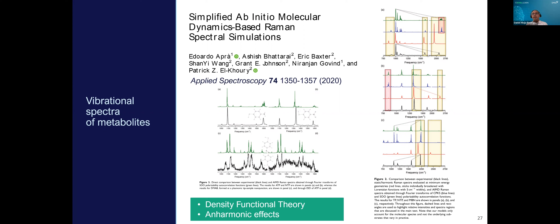Because computing Raman spectra this way is expensive, we use an approximation for the polarizability that is very fast — almost free after a ground state calculation — allowing a rather lengthy molecular dynamics trajectory to compute the autocorrelation function and converge the result. We are also working on improving statistics along the trajectory and improving the approximate polarizability calculation. We show that in principle we can get the main peaks in the right regions, though we need longer trajectories to capture the anharmonic effects.